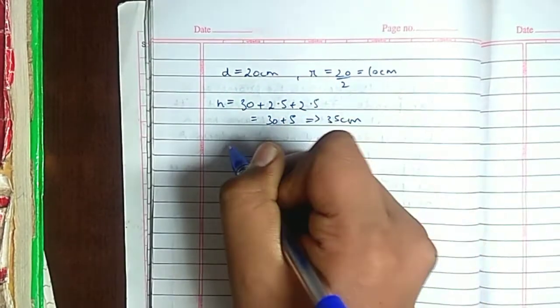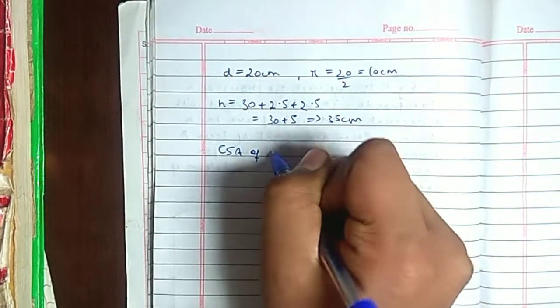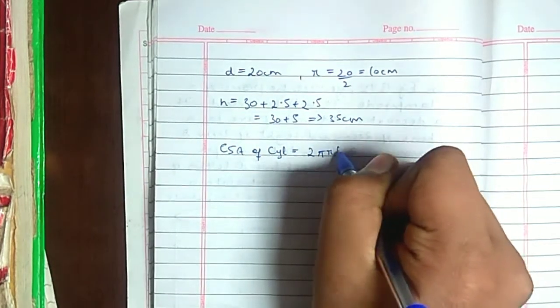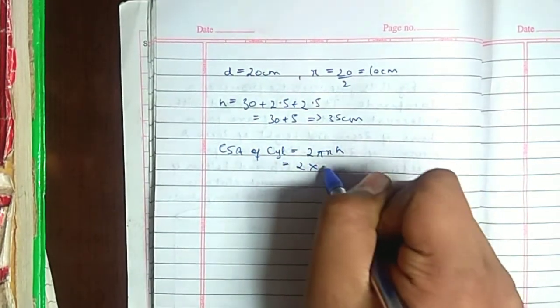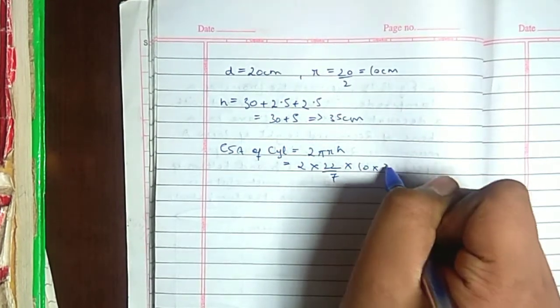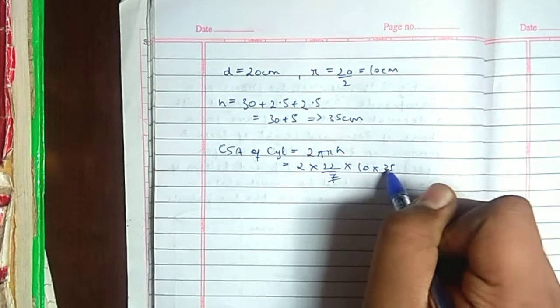Now, we are going to use the CSA of Cylinder formula. CSA of Cylinder formula is 2 pi r h. 2 multiplied by 22 by 7. R is our 10 cm. Height is 35 cm.